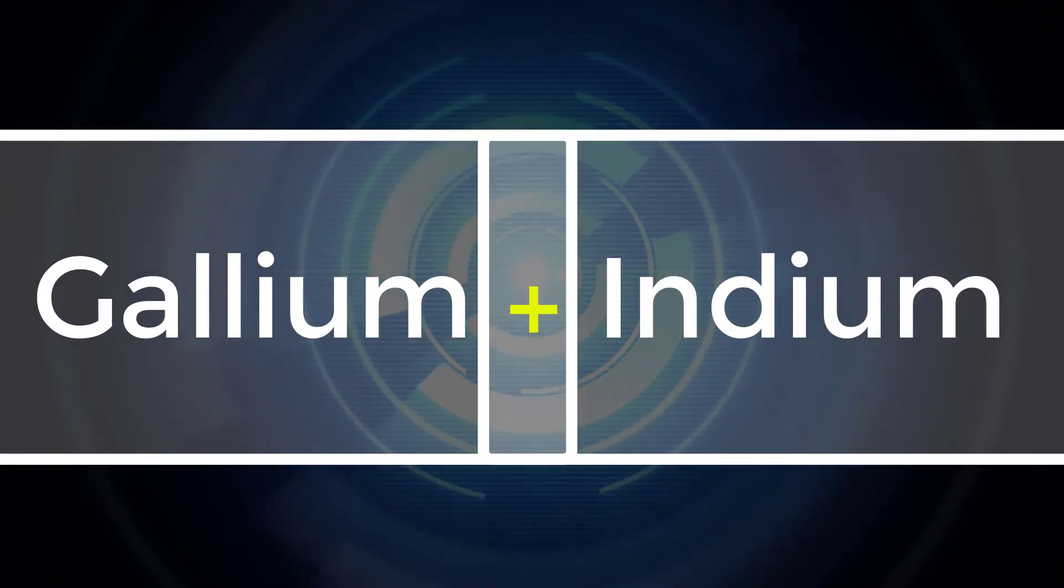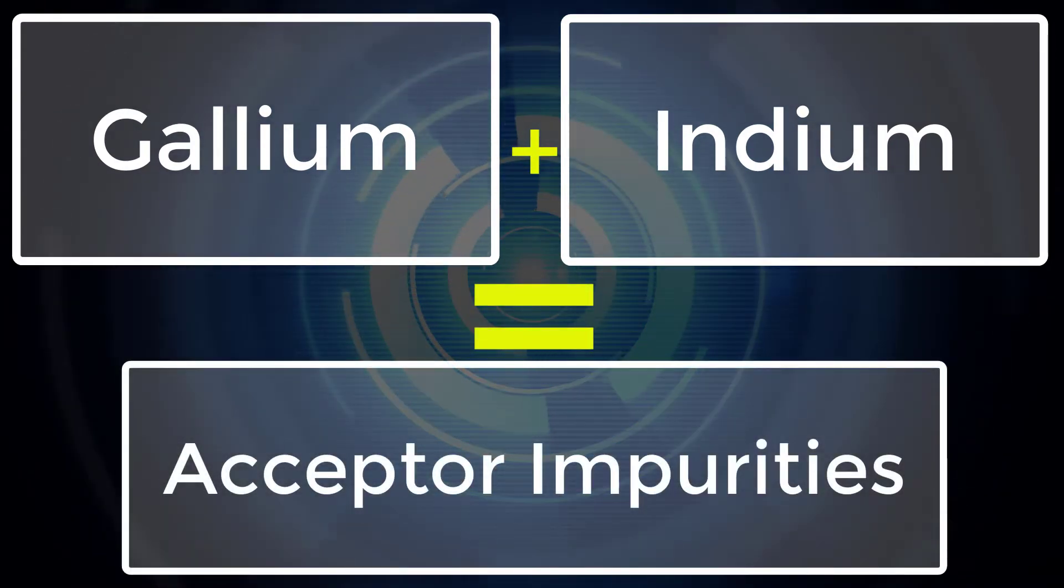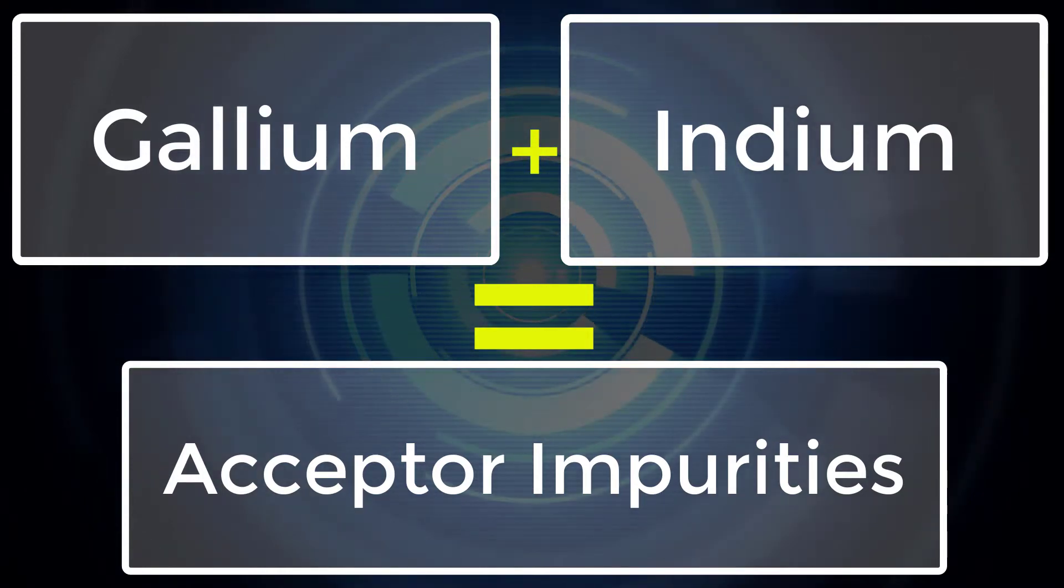Such type of impurities which produce P-Type Semiconductor are known as the acceptor impurities because each atom of these creates one hole which can accept one electron.